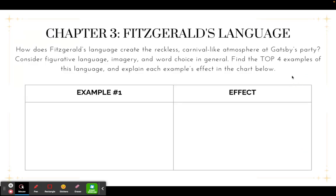As we read chapter three — chapter three is where we meet Gatsby. Nick is invited to Gatsby's mansion for a big, massive party. In the beginning of chapter three, Fitzgerald, who's our author, uses very specific language to convey this carnival-like, reckless atmosphere at Gatsby's party. It's a wild party with hundreds of people there. So you're going to pick four examples — it could be one quote or a small passage — and consider the figurative language, the imagery, and the word choice, explaining how Fitzgerald uses this specific language to make the image of a wild, crazy party appear in your brain as you're reading.